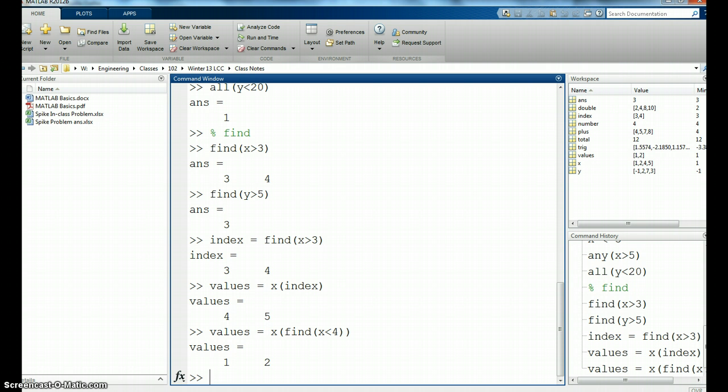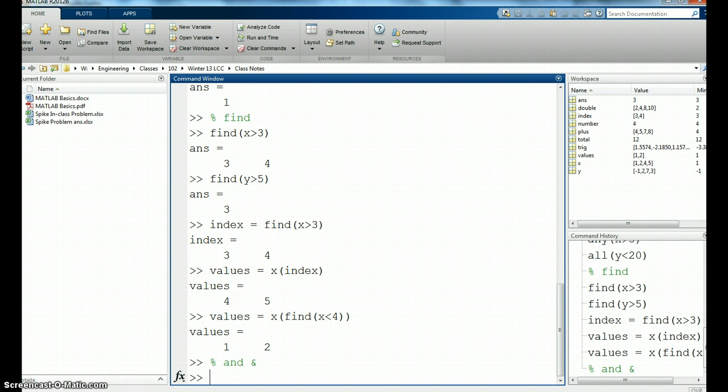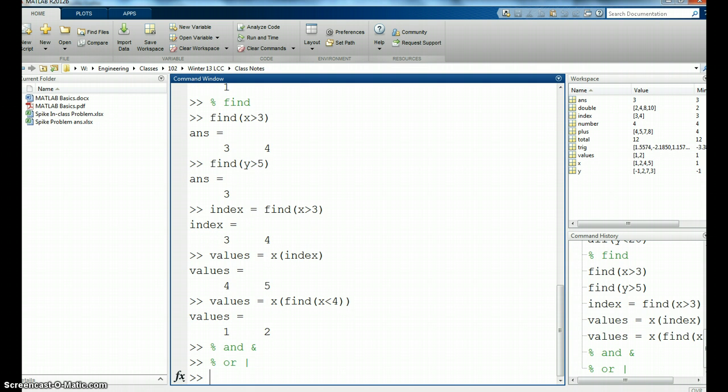One last area in relational operators are or, and, and not. So I will type those, what those will look like in here. So I have and, which in MATLAB is above the 7. It looks like and. I'm putting these as comments just so you see them. Or is above the enter or the forward slash, it's a straight line up and down. And the third one is not, which is tilde shift.